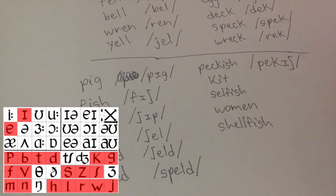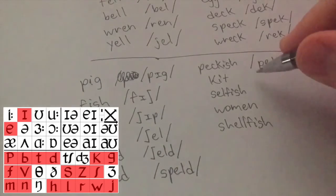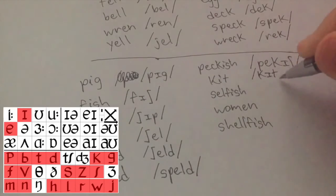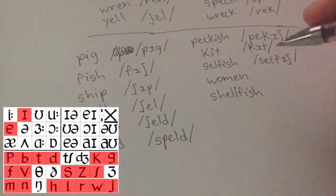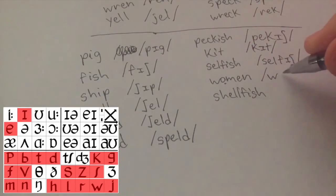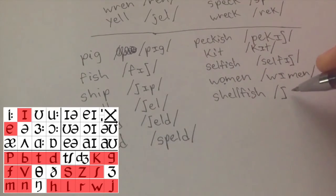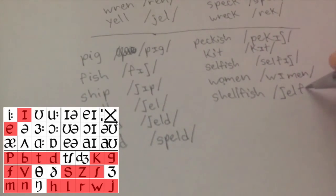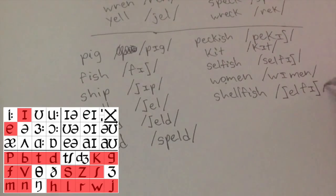I hope you're pausing this and going through it on your own and thinking through each one first instead of just watching me do it. Kit. Selfish. Peckish. This one's tricky. We men. Women. And then shellfish.